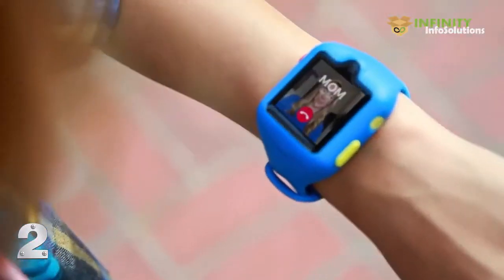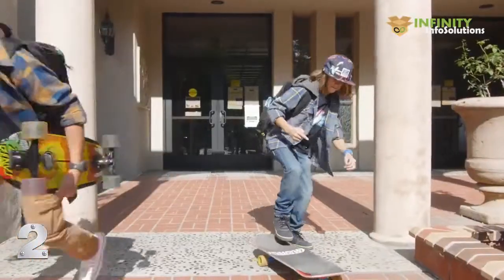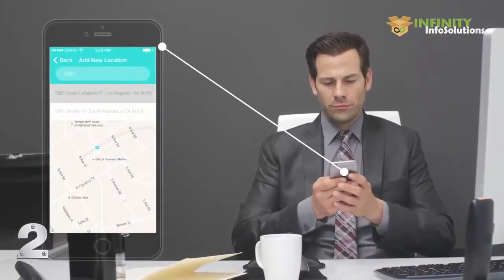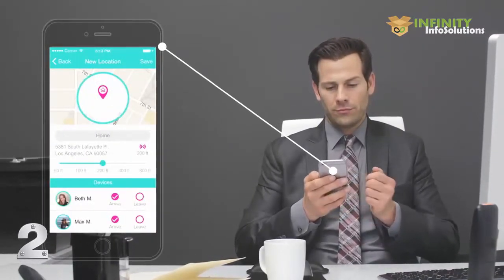Hey, Mom. Can I go to the skate park? Sure, honey. Just be home in time for dinner. DokiWatch uses advanced GPS, GSM, and Wi-Fi technology to help parents conveniently and accurately track their child's location.